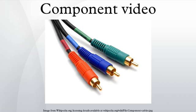In addition to the red, green, and blue color signals, RGB requires two additional signals to synchronize the video display. Several methods are used: composite sync, where the horizontal and vertical signals are mixed together on a separate wire; separate sync, where the horizontal and vertical are each on their own wire; and sync on green, where a composite sync signal is overlaid on the wire used to transport the green signal.